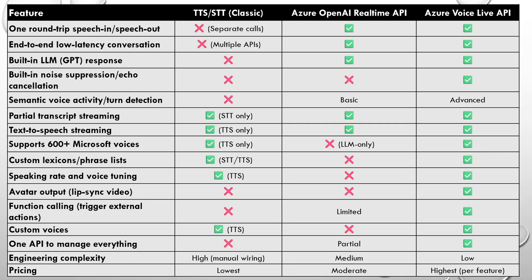Let's compare features across text-to-speech, real-time model, and Voice Live API. Round-trip speech-in speech-out is not available in TTS because it involves separate speech-to-text and text-to-speech calls. However, it works in the real-time API as a speech-to-speech model, and the same applies to Voice Live API. End-to-end low-latency conversation is not possible with TTS — there's always some latency. The real-time API handles this well, and so does Voice Live API since it uses real-time models in the backend.